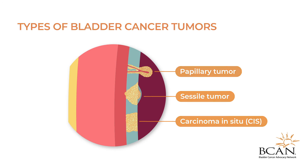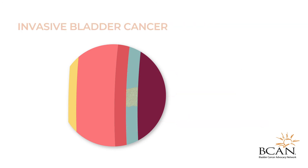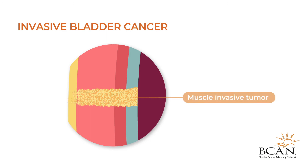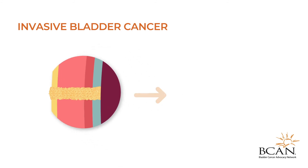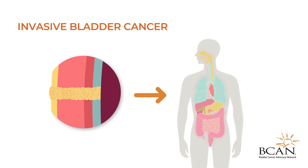In some cases, bladder cancer can spread. It's called muscle invasive bladder cancer when the cancer cells invade structures beyond the lining cells. It's also possible for the cancer to metastasize, or spread, to other parts of the body.